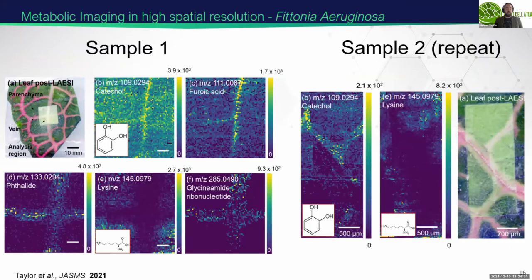This is some of the imaging data we can acquire using this process. We're showing 2D ion images displaying specific species we're detecting. For instance, we're looking at secondary metabolites — catechol and ferulic acid — actually localized in the vein structure, suggesting they may be somehow involved in nutrient delivery. Whereas lysine localizes in the chlorophyll-containing regions, suggesting it may be somehow involved in photosynthesis. Obviously these are preliminary annotations and we need more validation.